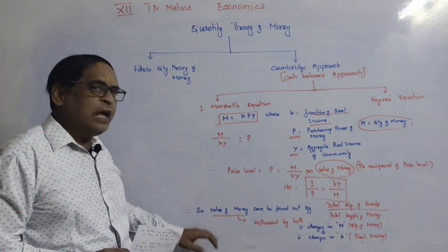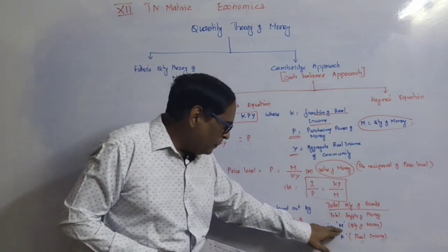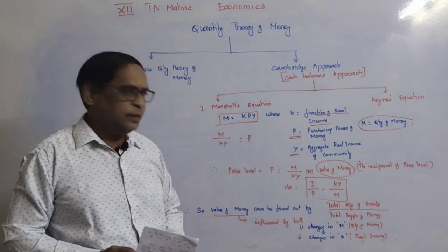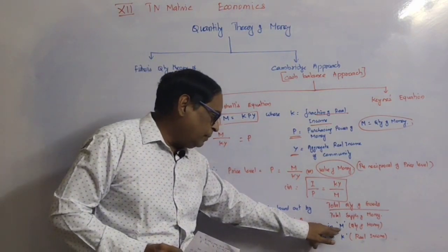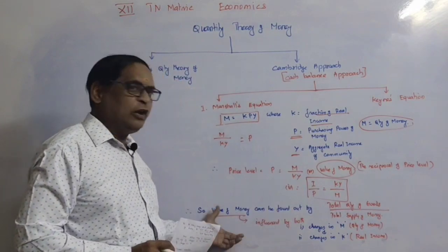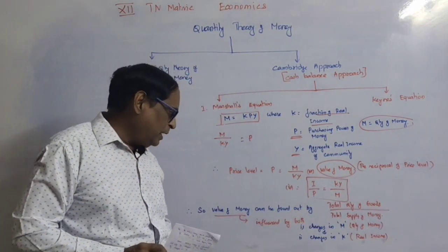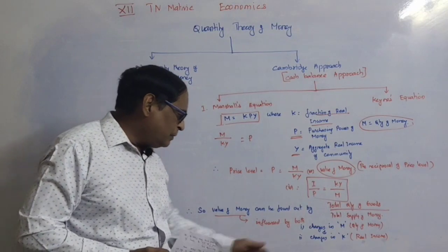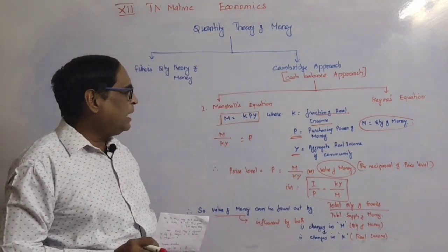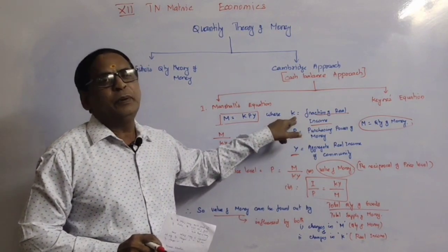The value of money is influenced not only by M but also by K. Money even depends on the quantity of money. K is the fraction of real income. That is why the value of money can be determined.